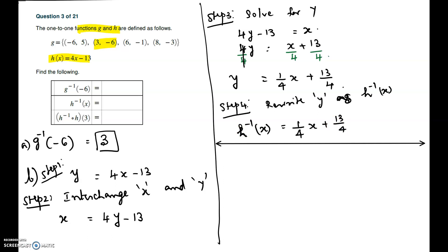The third part is to find h inverse composite h at 3. That is the last part. Using composite functions definition, it is h inverse of h at 3. You have to go from inside out.